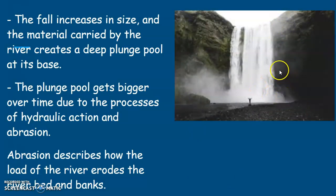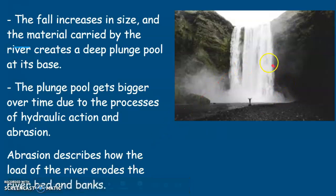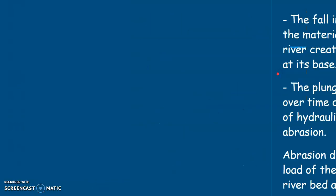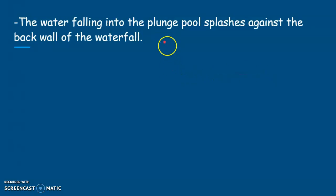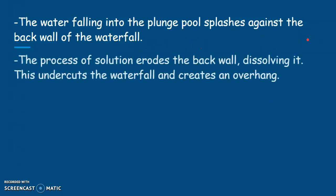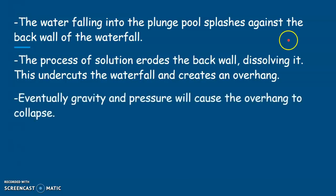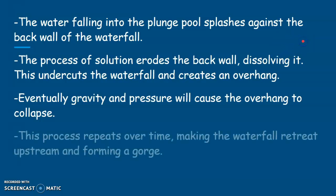Behind some waterfalls there is a cave. The water falling into the plunge pool splashes against the back wall of the waterfall, and the process of solution erodes the back wall by dissolving it. This undercuts the waterfall and creates an overhang. Eventually gravity and pressure cause the overhang to collapse. This process repeats itself over time, making the waterfall retreat upstream and forming a gorge.